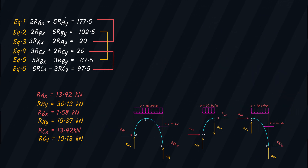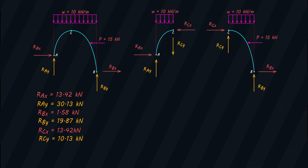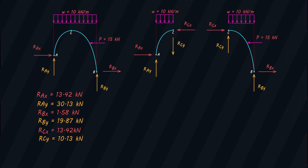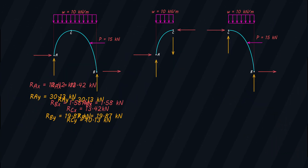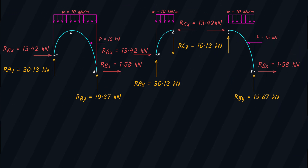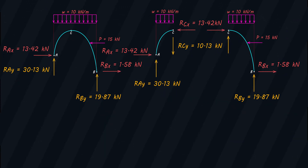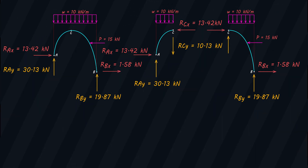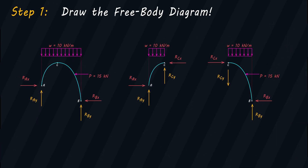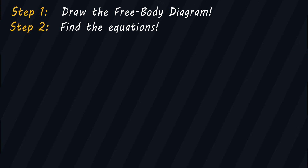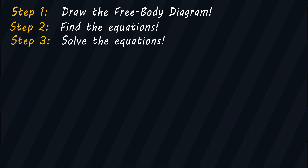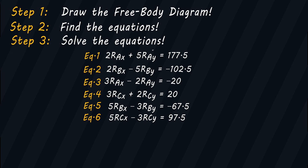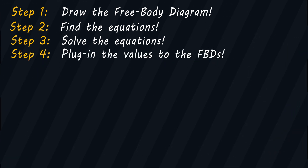These are all the reactions we need. The last thing to do is plug these values into our free body diagrams, making sure all necessary corrections — especially the directions of the reactions — are incorporated. To summarize: we drew the free body diagram, found all required equations using summation of moments at key points, solved for the reaction magnitudes, and plugged the reactions back into our free body diagrams.